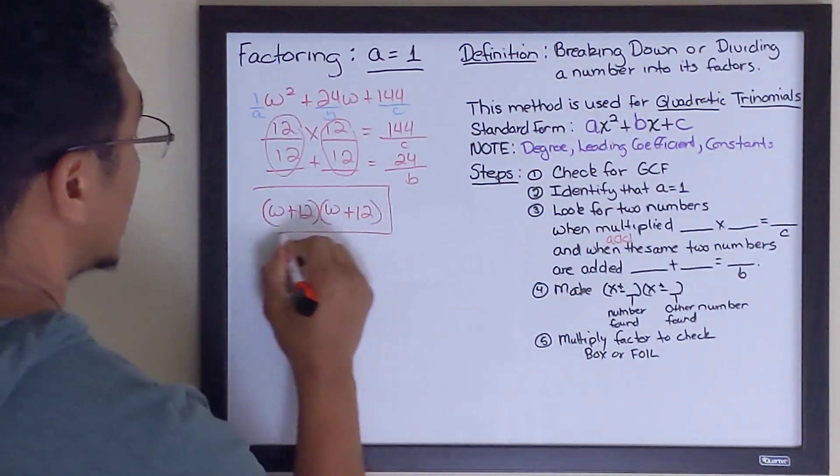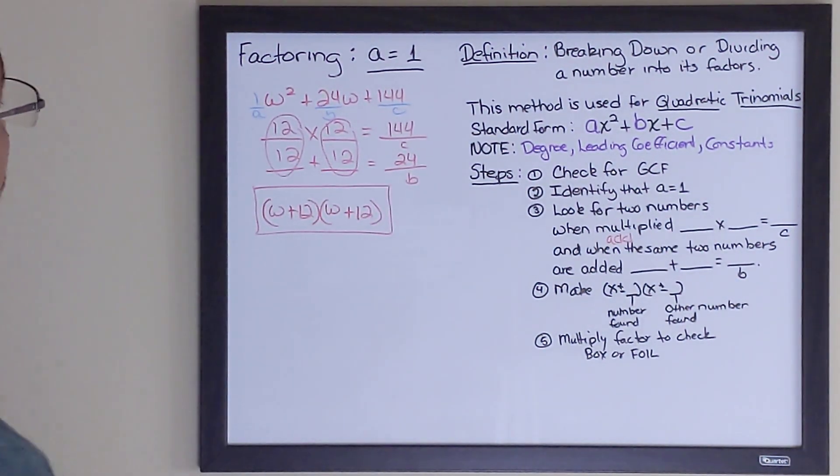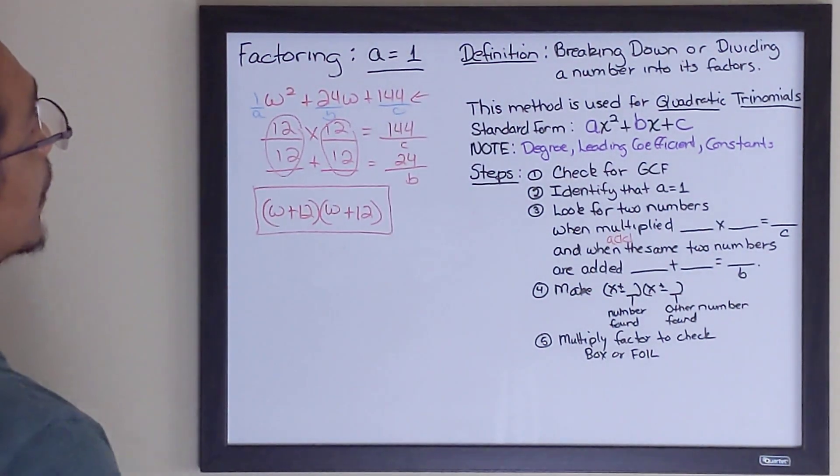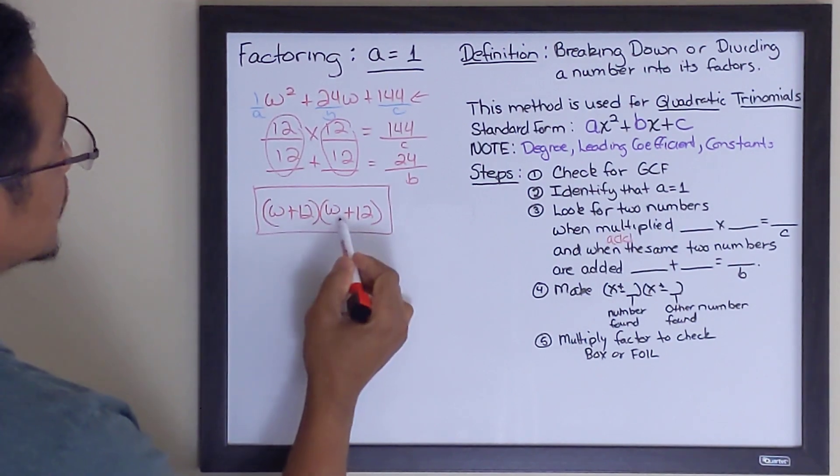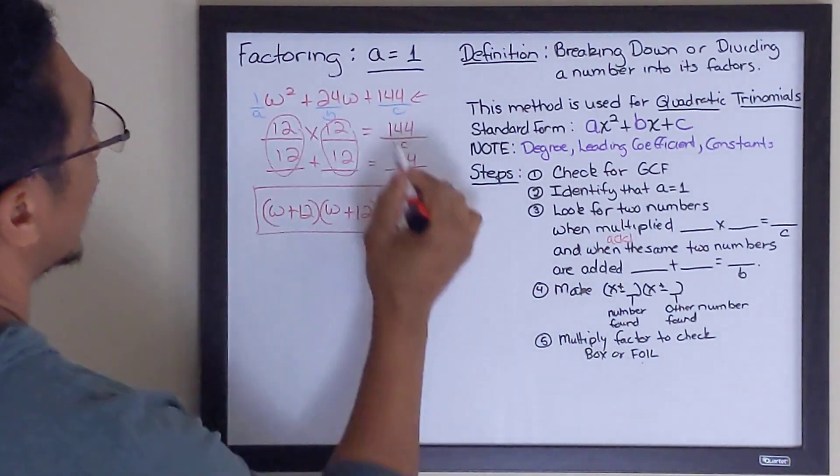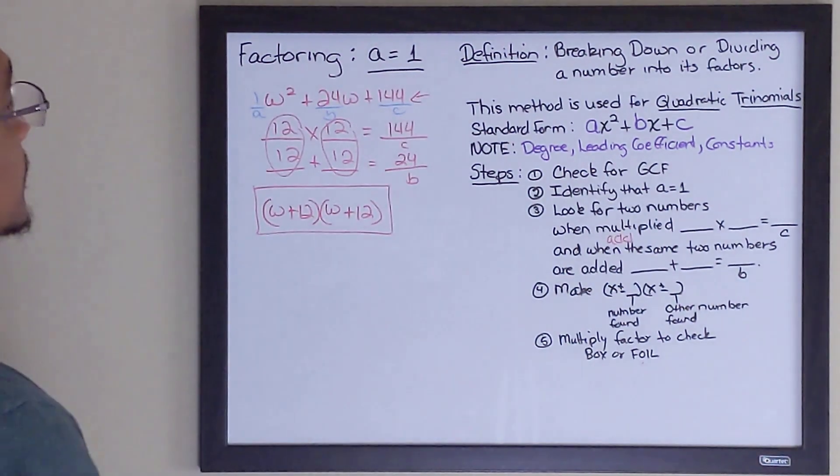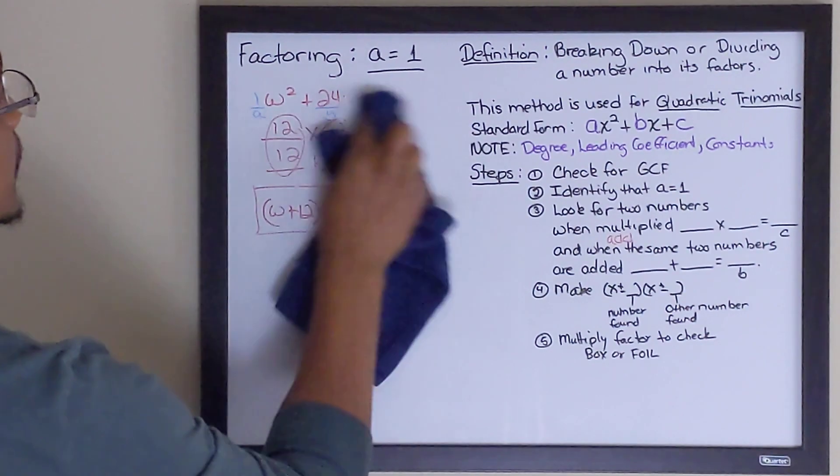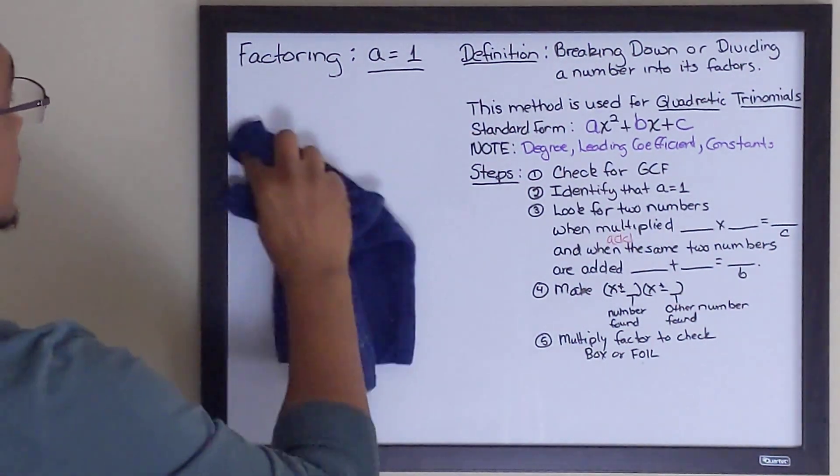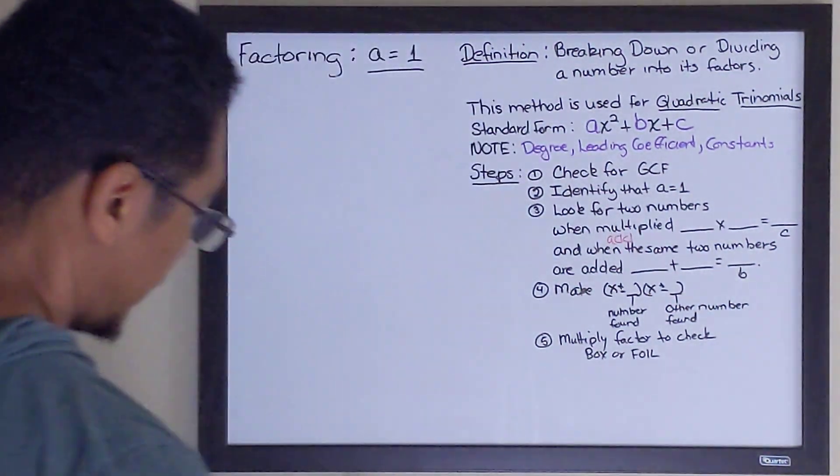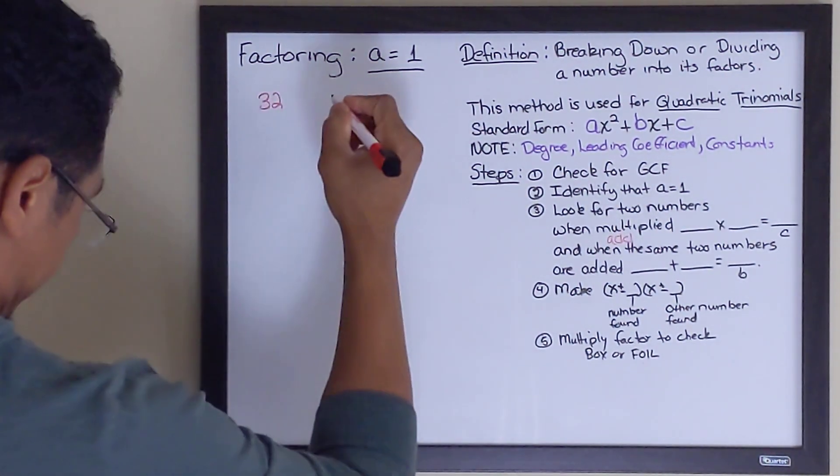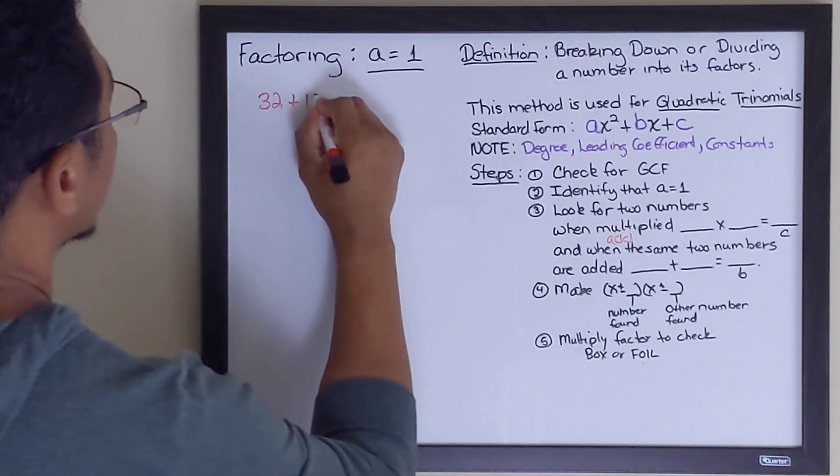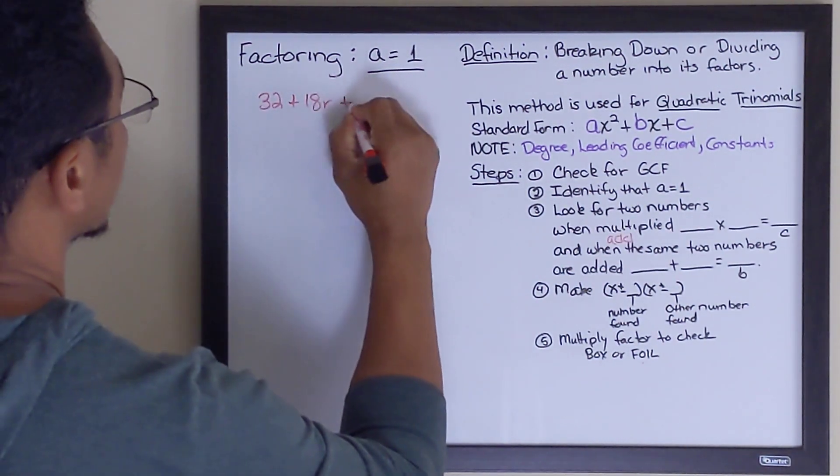This is the factored form of this polynomial. We broke this down. Here's what it looks like. If I was to multiply these two together using either box method or foil method, I should get this polynomial. So let's move on to our next example.